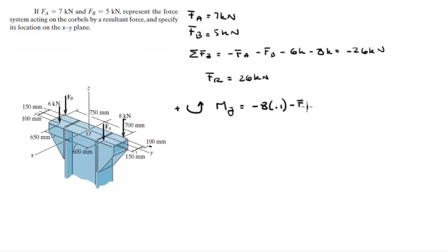Minus f of b times 0.15. That's this f of b times this 1.5 right here. Plus f of a times 0.15. Plus 6 times 0.1. That is the 6 and this is 0.1. When you plug all this in, this is equal to positive 0.1 kilonewton meters.